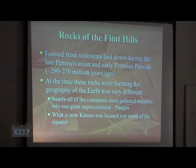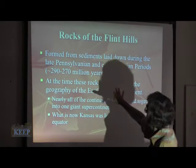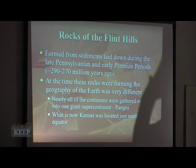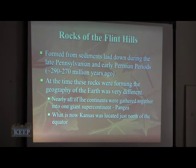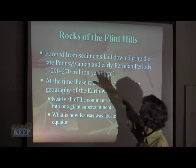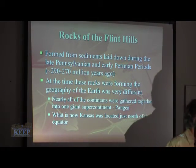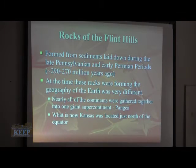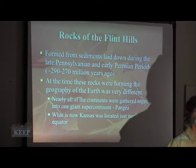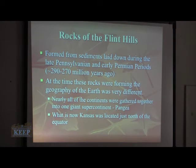What about the rocks themselves? All the rocks — not just here, but in the Flint Hills generally — so this is the whole Flint Hills from Nebraska to Oklahoma — represent rocks from what's called the Late Pennsylvanian into the Early Permian periods, an interval of something like 290 to 270 million years ago.